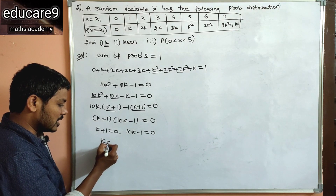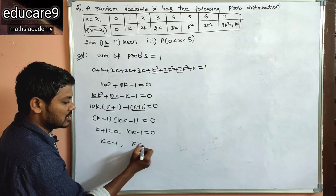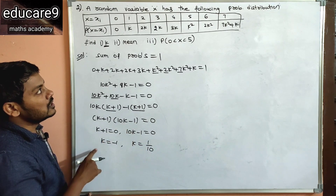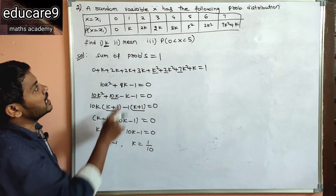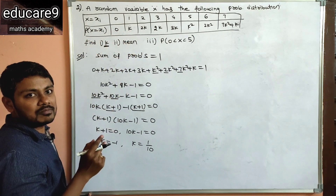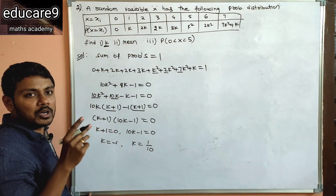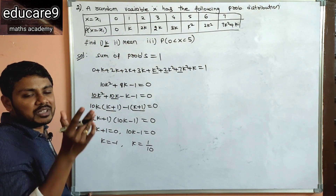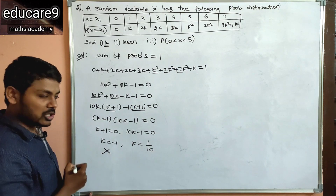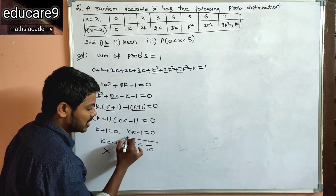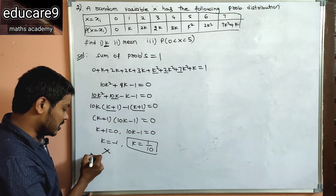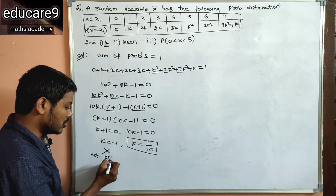If K = −1, substituting gives negative probability values. But probability values must lie between 0 and 1, so K = −1 is not possible. Therefore, K = 1/10 is the valid value.